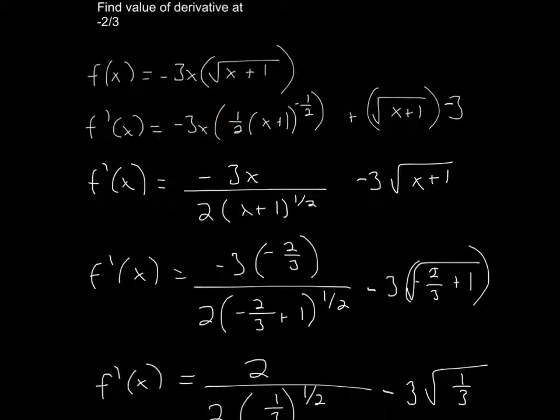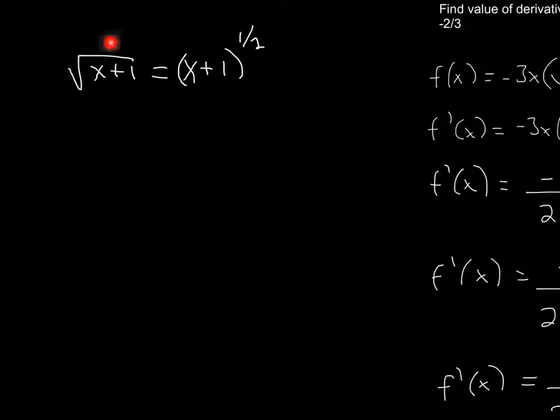So it's the first term times the derivative of x plus 1, which will equal this. How I got this? Well, this can be rewritten as this. Square root of x plus 1 is the same as x plus 1 raised to the power of 1 half.